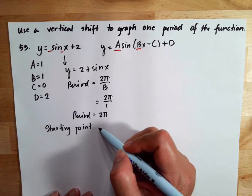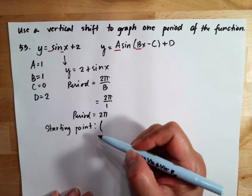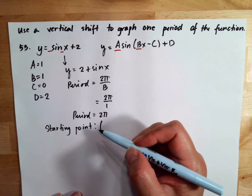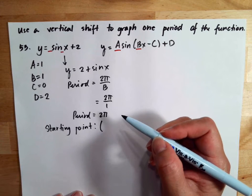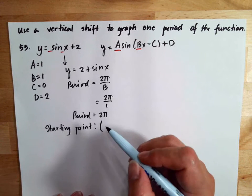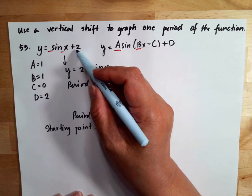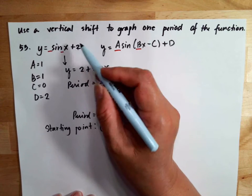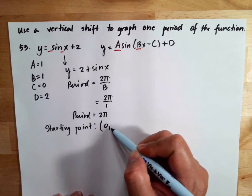There's no horizontal shift, but there is a vertical shift. So your starting point would normally be at zero, zero, but since you move up two, it will be at zero, two.